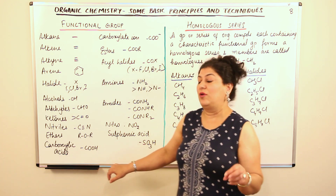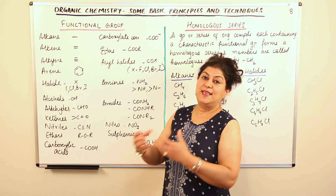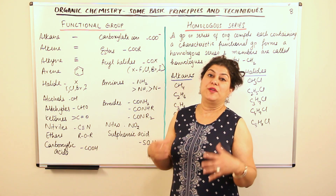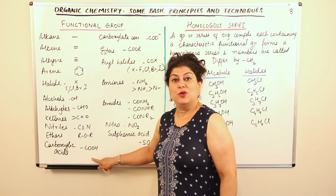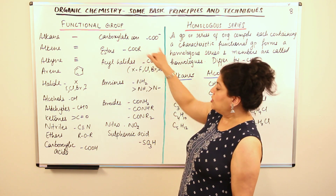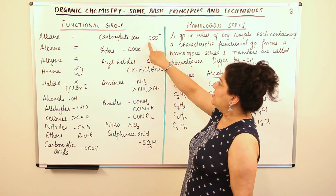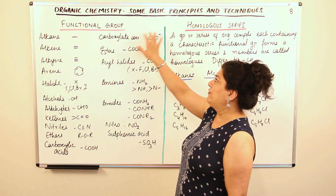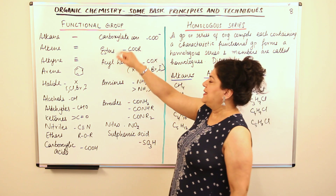Carboxylic acid is the functional group which is COOH. If the compound has COOH, it is a carboxylic acid, and it is this part which is responsible for its acidic behaviour. Therefore, the functional group is COOH. Then there is the carboxylate ion, which is formed when the H is removed from the carboxylic acid. So it is COO⁻ negative, because H⁺ will be removed, leaving you with an ion that is COO⁻. It is known as the carboxylate ion.